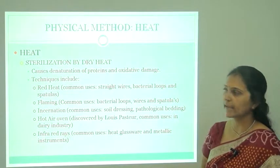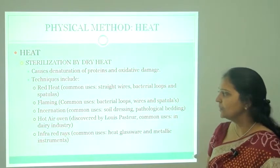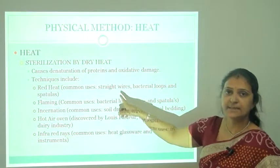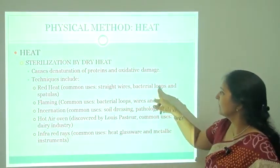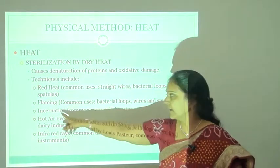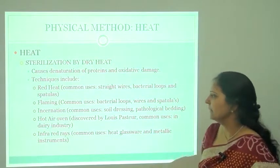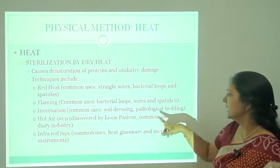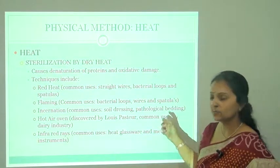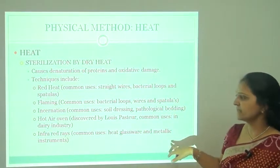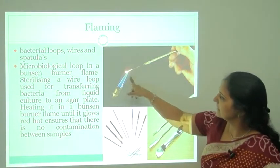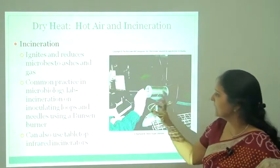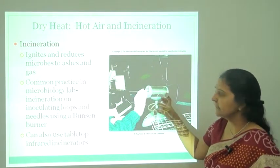Sterilization by dry heat uses a hot air oven and incineration. Techniques include red heat, commonly used for sterilization of nichrome wire and straight wires, bacterial loop wire, and spatula. Flaming is used for bacterial loop wire and spatula. Incineration is used for sterilization of needles and soiled dressings. Hot air oven is used for sterilization of glasswares and in the dairy industry. Infrared rays are used to sterilize glasswares and metallic instruments.